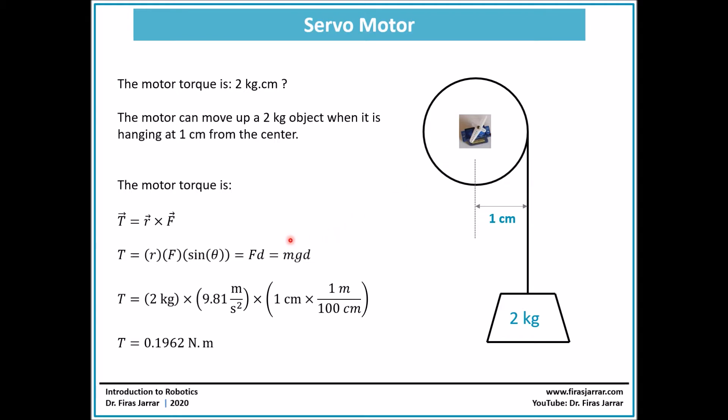If we substitute this into the formula for torque, we have the force times the perpendicular distance. The force would be the weight, in this case 2 kg times 9.81 which is the acceleration due to gravity on earth, and then multiply it by d, 1 cm. Just don't forget to use consistent units, so if we have meters here we should have meters here, so we divide it by 100 cm. This will give you a torque of about 0.2 Nm.